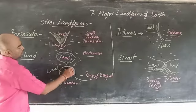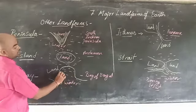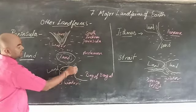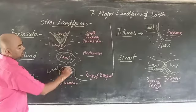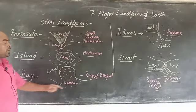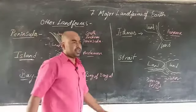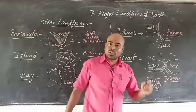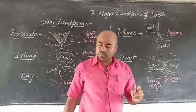Next is bay. A bay is a curved stretch of water. Water is stretched beside the land in a curve, and that is known as a bay. For example, the Bay of Bengal in India.